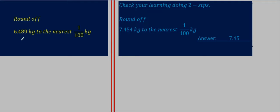Now the rounding of 6.489 kg to the nearest 1/100 kg. First we convert 1/100 into decimal, so 1/100 means 0.01. Here we place the decimal before two zeros.